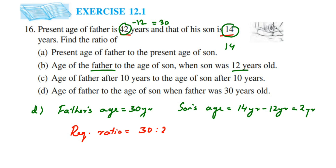Converting to a fraction: 30 upon 2. Cancel this — 2 ones are 2, 2 fifteens are 30 — so we get 15 upon 1. The ratio will be 15 is to 1. That's it. I hope this question is clear. In case you have any questions or doubts you can drop a comment. Thank you so much for watching.